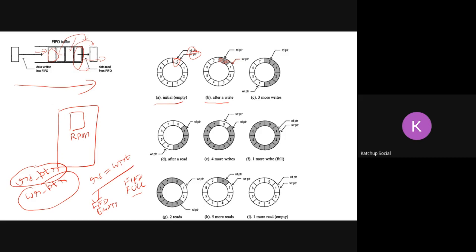The write pointer points to where data will be written next, and the read pointer points to where the next read will happen. If you do three more writes, the data gets written at consecutive addresses and the write pointer advances, but the read pointer stays at zero since nothing has been read yet. When a read operation occurs, the read pointer reads from address zero and moves to the next address.